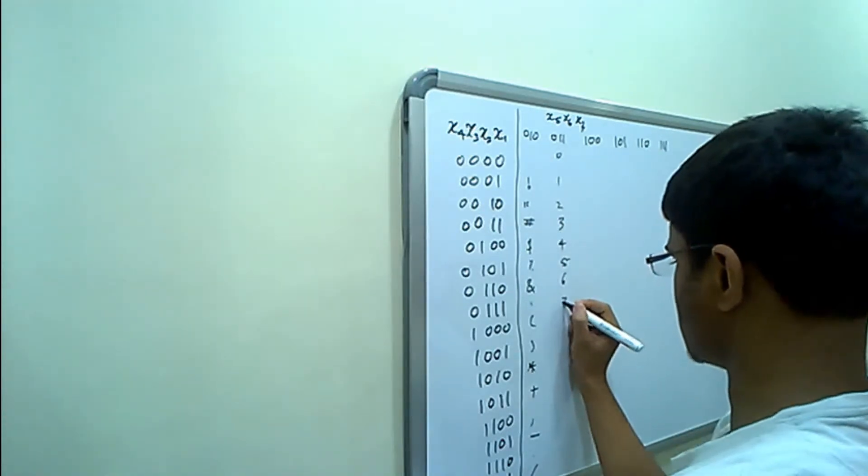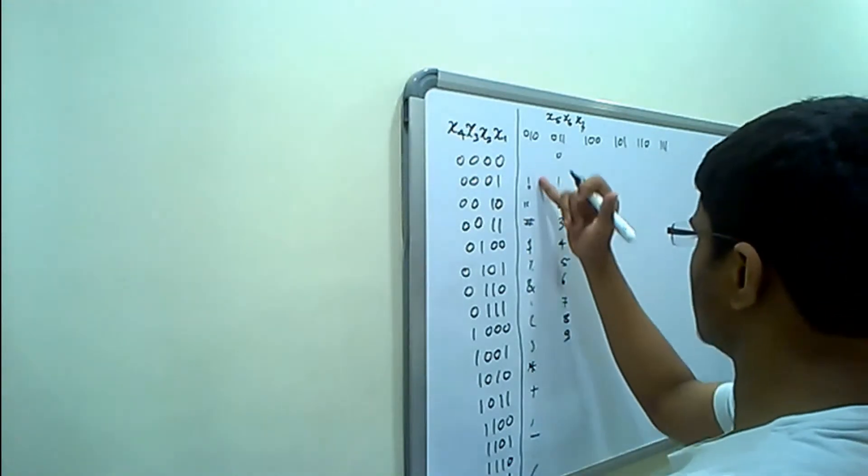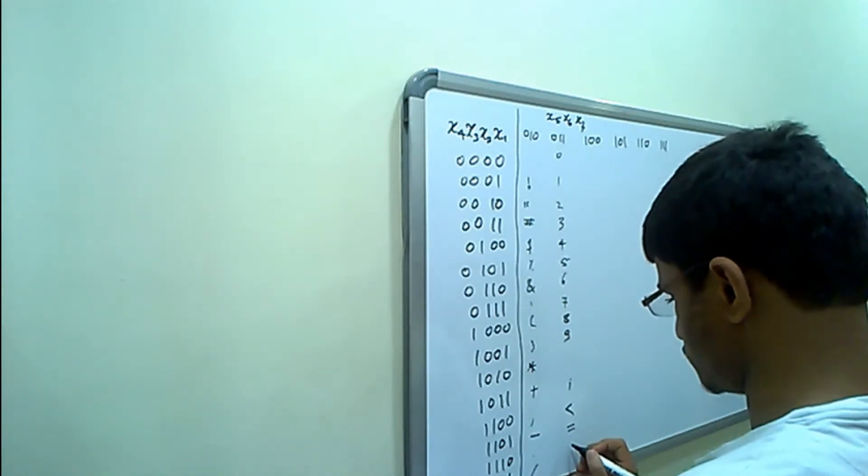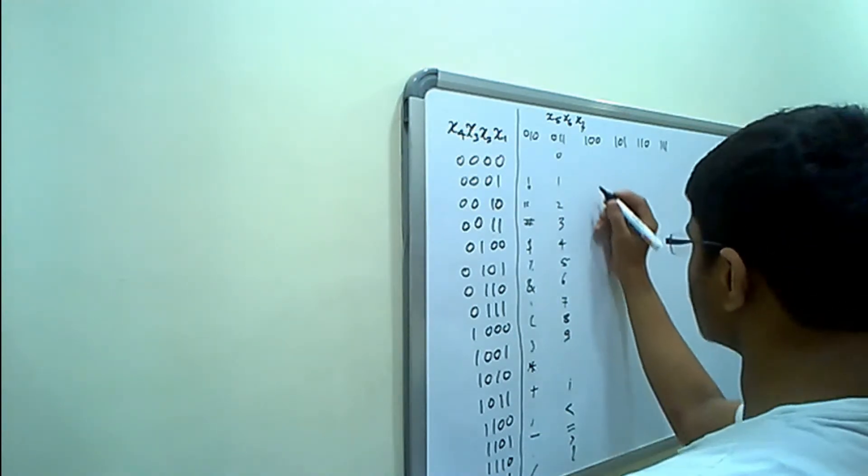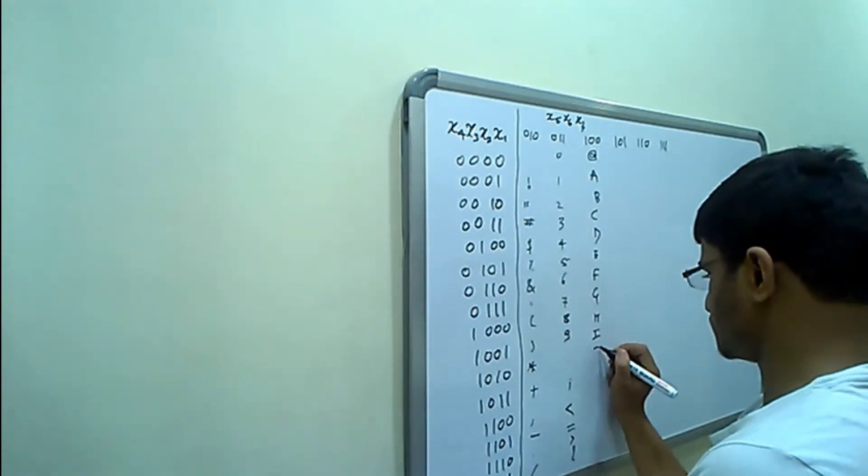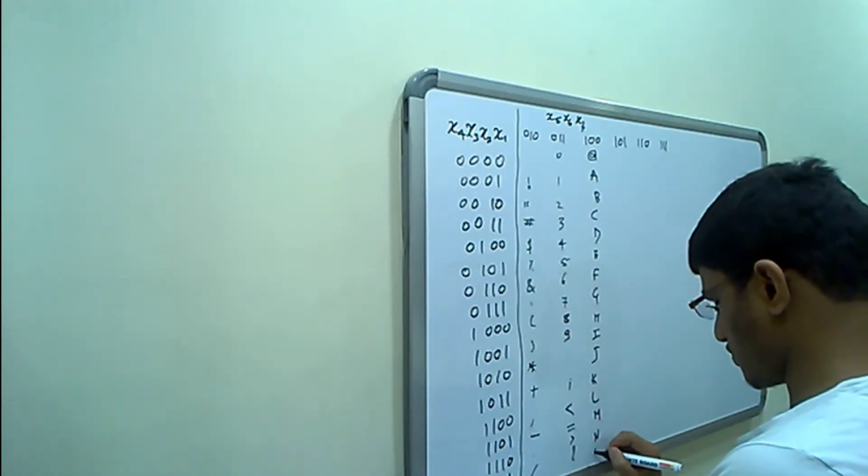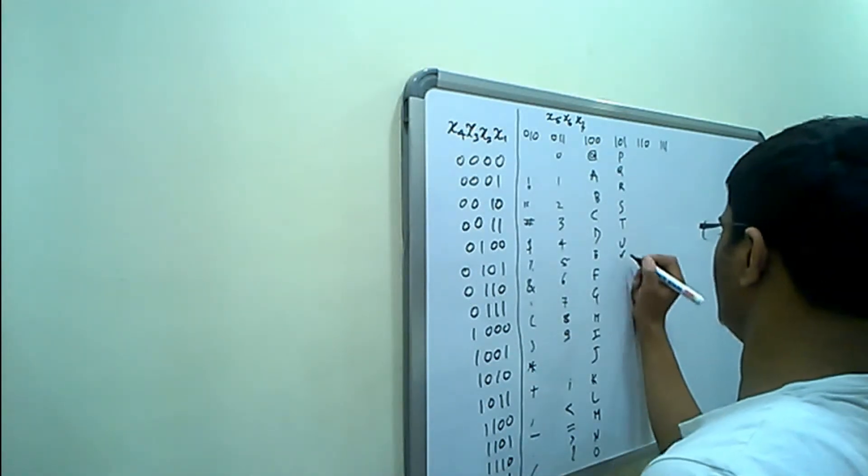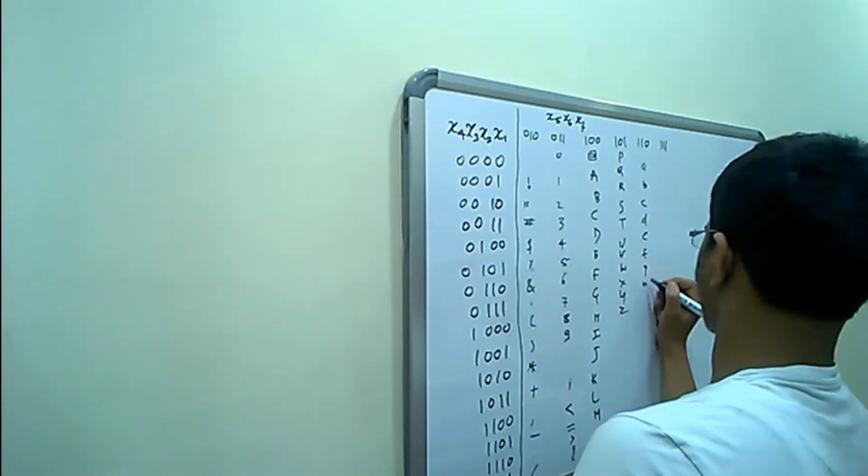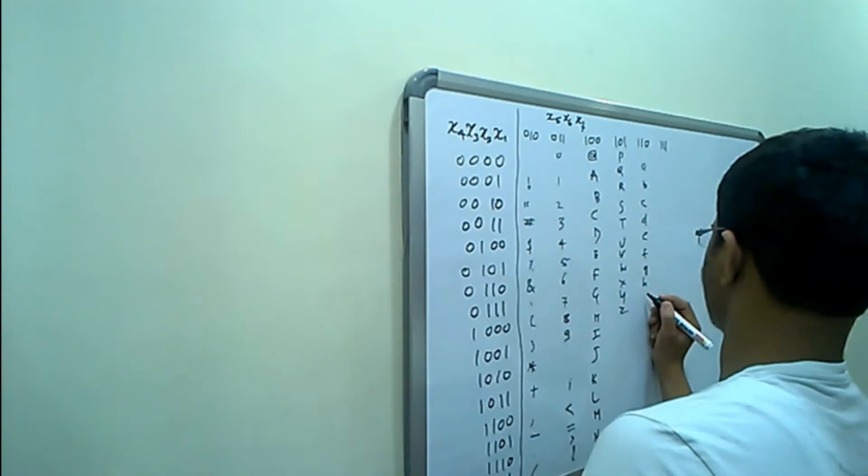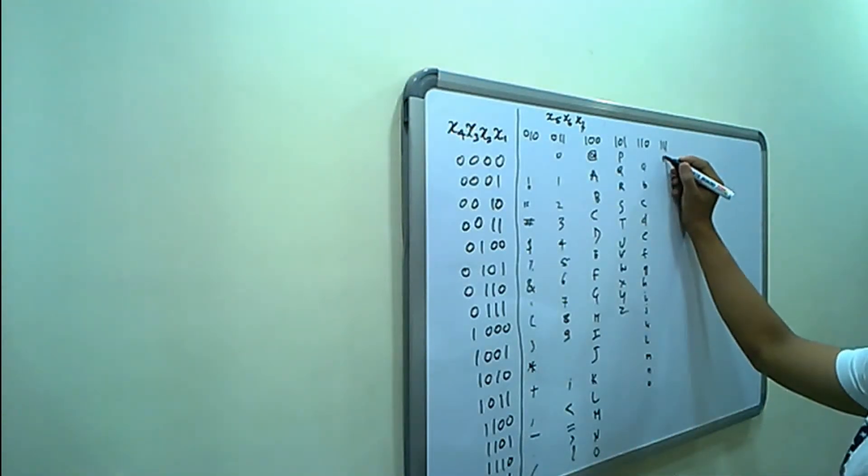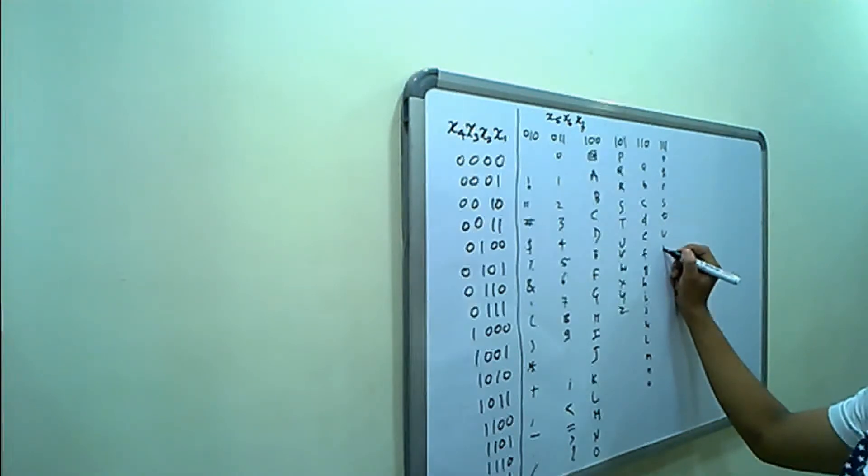Five, six, seven, eight, and the final number nine. Here we will also continue with the symbolic representation - colon, semicolon, less than, equal to, greater than, question mark. Then A, B, C, D, E, F, G, H, I, J, K, L, M, N, O, P, Q, R, S, T, U, V, W, X, Y, Z.